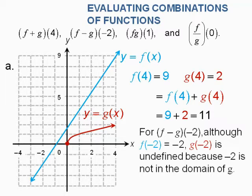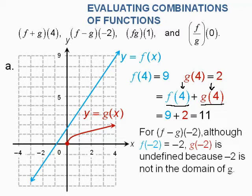We're going to start out evaluating f plus g of 4. Remember that's the shorthand way to write it — the better way to write it is f of 4 plus g of 4. Graphically, f of x is the blue line and g of x looks like the square root function in red. We substitute 4 in for x in both functions. I'm going over to where x is 4, going up to the blue line, and putting a black dot there.